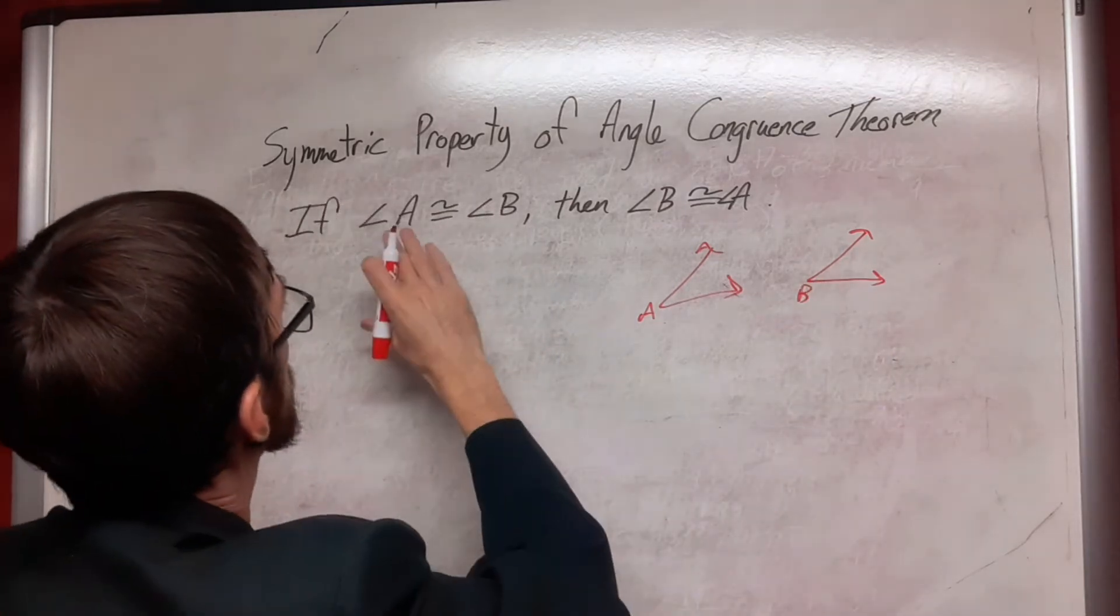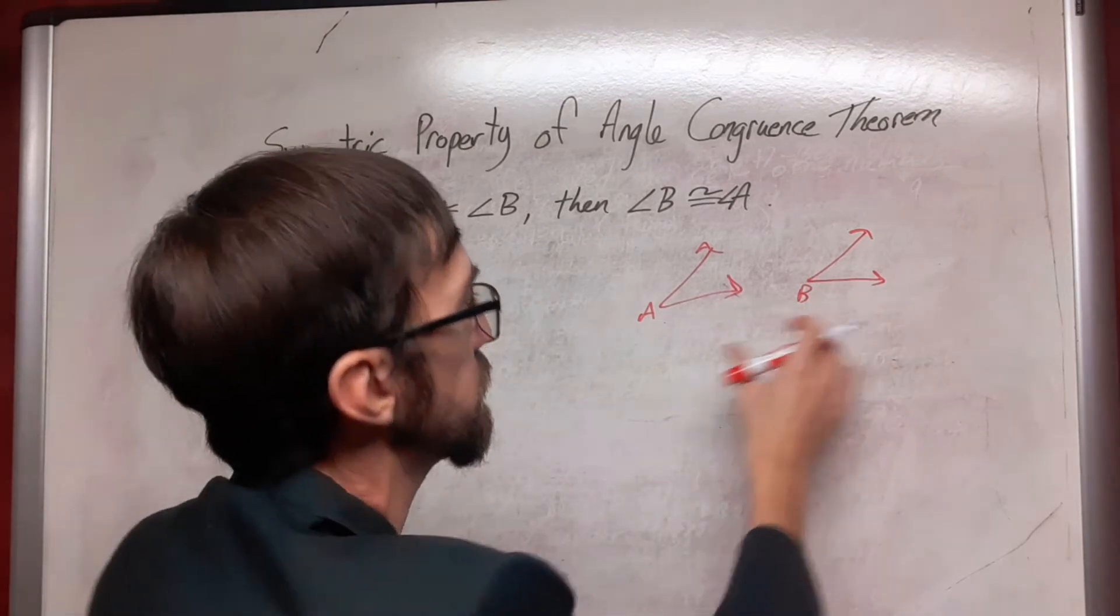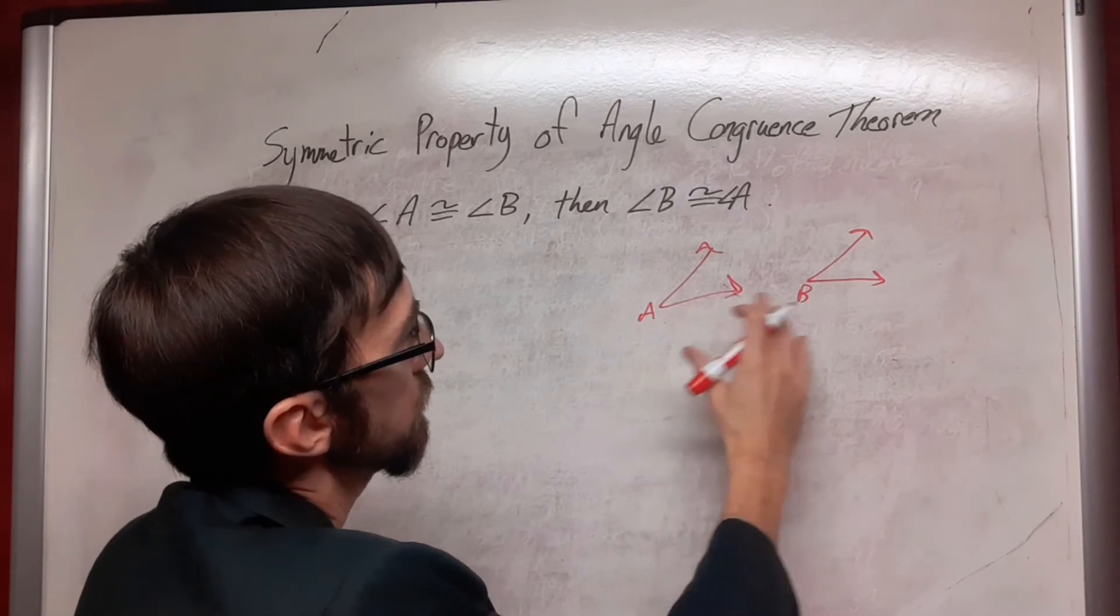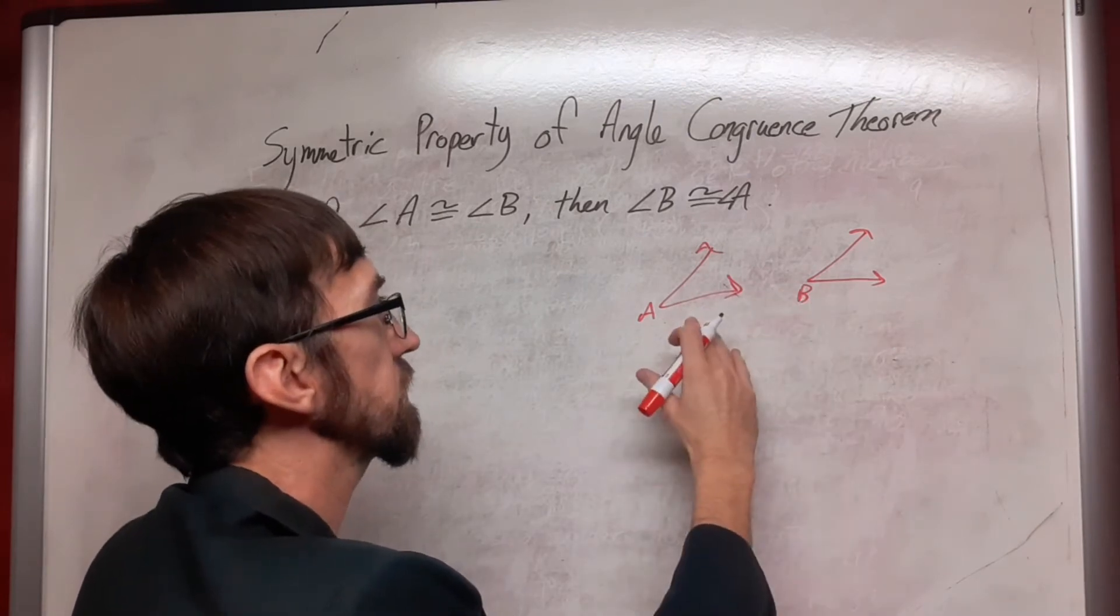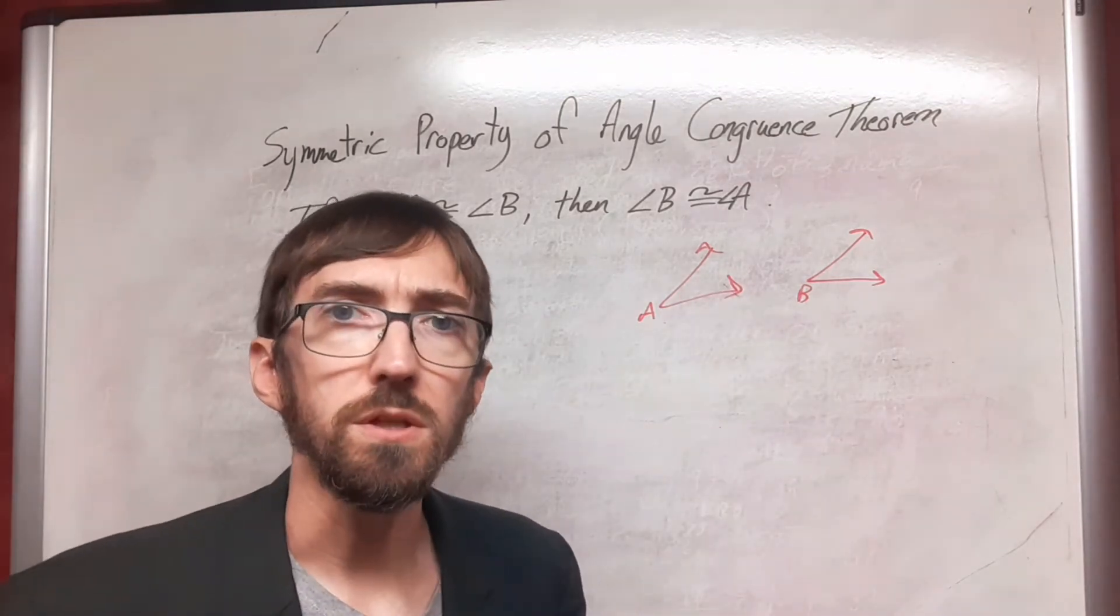And it says that if I have that A and B are congruent, then I must have that B and A are congruent. If we look at this picture, if we draw A, and then we draw B to kind of look like A, then when we look at B, it should look like A because that's the model that we used.